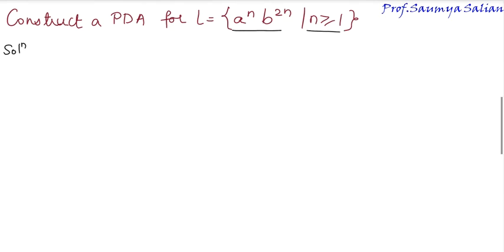Let's first define the language. When n equals 1, we have abb as the smallest valid string in the language. When n equals 4, we have aa followed by bbbb. When n equals 3, we have aaa, bbbbbb, and so on. The language is not finite, it is infinite.